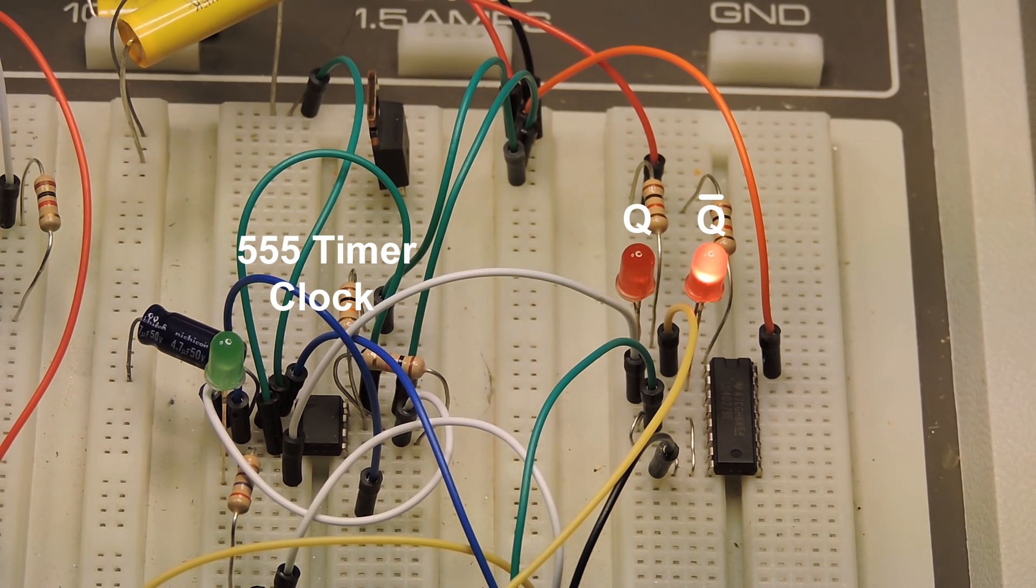One of them is behind the blinking green LED. That's a 4.7. Then above that, the yellow one is a .1 microfarad, and above that is a 47 microfarad capacitor.